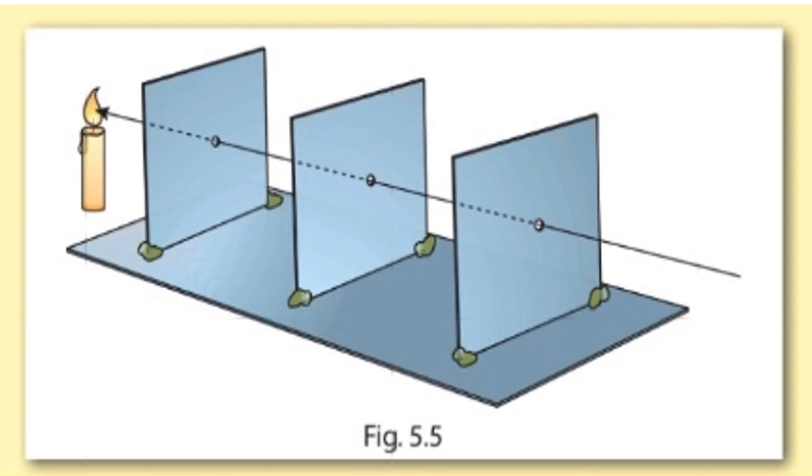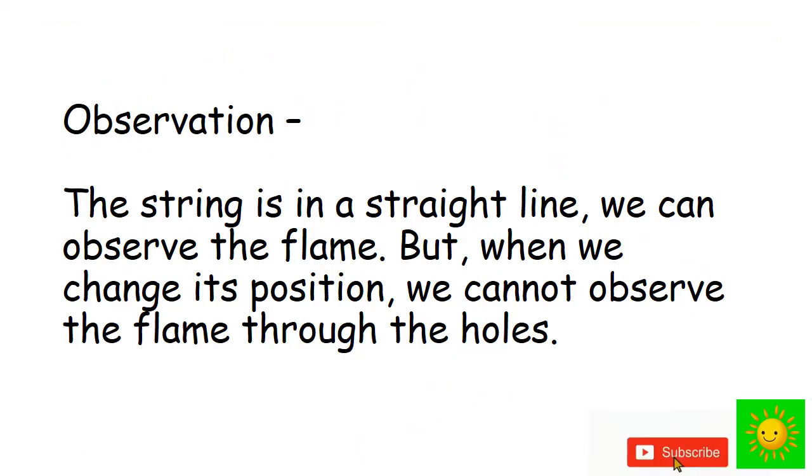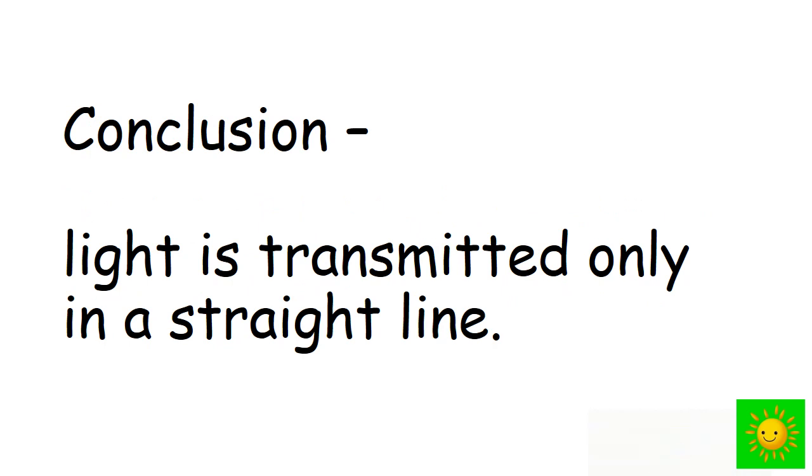Change the string position and observe the flame again through the holes. When the string is in a straight line we can observe the flame, but when we change its position we cannot observe the flame through the holes.